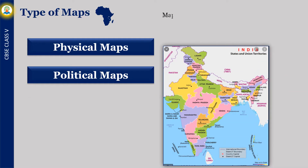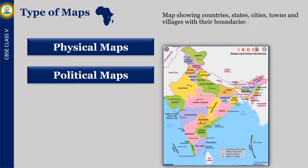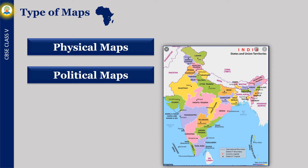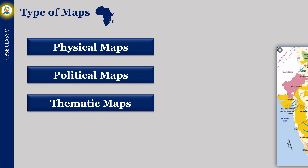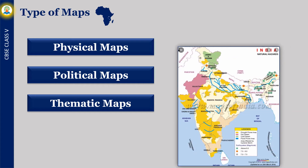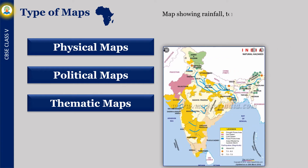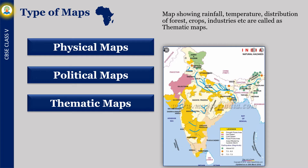Maps showing countries, states, cities, towns and villages with their boundaries are called political maps. Maps showing rainfall, temperature, distribution of forest, crops, industries, etc. are called thematic maps.